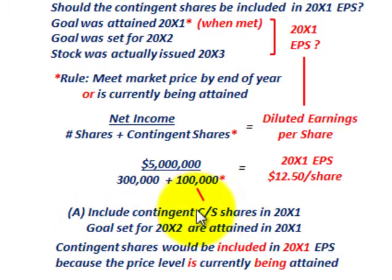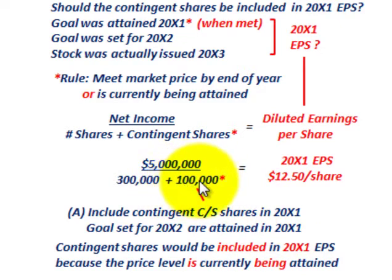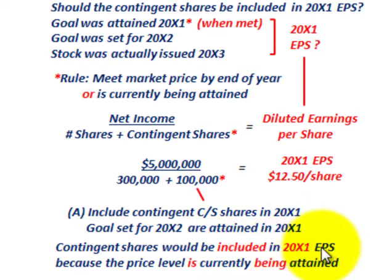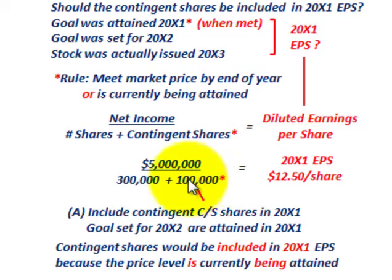We include those contingent common stock shares in 20x1. The goal was set for 20x2, but was attained in 20x1, and based on our rule, we have to include them to calculate our diluted earnings per share. Those contingent shares are included in the 20x1 earnings per share because the price level is currently being attained — even though the goal was set for year 20x2, we attained it in year 20x1.